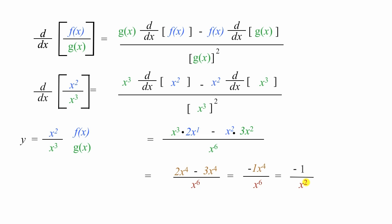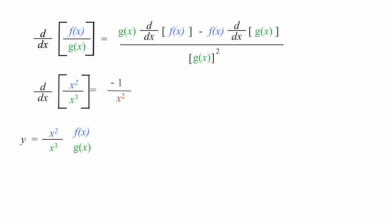Bada bing, Bob is your uncle. The derivative of x squared divided by x cubed is equal to negative 1 divided by x squared. This means the slope of x squared divided by x cubed is never positive. Let me graph this for you.